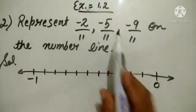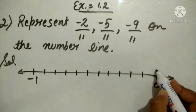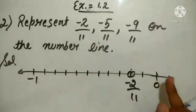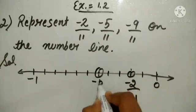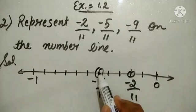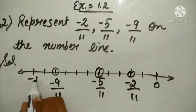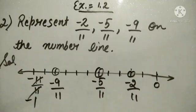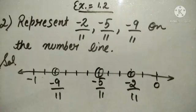From 0, count the positions one by one. For minus 2 over 11, the 2nd position from 0 going left is the point. For minus 5 over 11, count from 0: 1, 2, 3, 4, 5 — that is the representation of minus 5 over 11. For minus 9 over 11, count 9 positions: 1, 2, 3, 4, 5, 6, 7, 8, 9 — that is minus 9 over 11. Note that the 10th position is minus 10 over 11 and the 11th is minus 11 over 11, which equals minus 1.